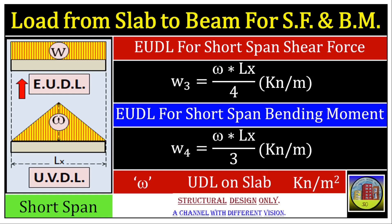Now let's explore how EUDL can also be applied to short spans. The load transferred from the slab to a short span beam often takes the form of a triangularly distributed load. Similar to long spans, we can convert this triangular load into an equivalent uniformly distributed load acting along the short span of the beam. The EUDL for shear force is W equals omega × LX divided by 4, in kN per meter.